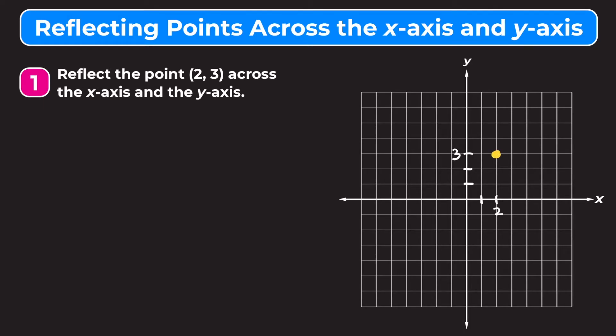First we're going to reflect it across the x-axis. The x-axis is our mirror line, so we just want to mirror the point across it — flipping it vertically. It has to be the same distance away from the x-axis, but on the bottom. So it's going to be down here. I'll write 'reflect across x-axis' over here.